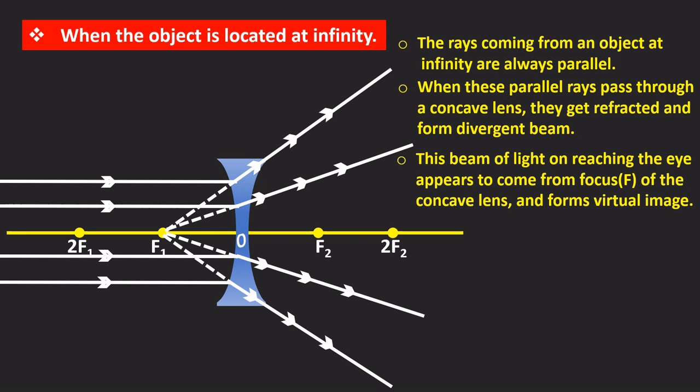This beam of light on reaching the eye appears to come from focus F of the concave lens and forms virtual image. Thus when the object is located at infinity the image is formed at the focus of a concave lens.